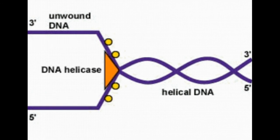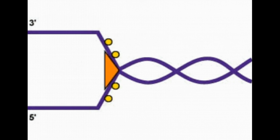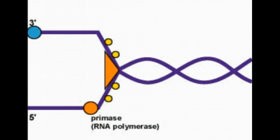Our first step is that DNA helicase is going to unzip our DNA. The little yellow proteins are going to keep the DNA open so that we can start adding new bases.